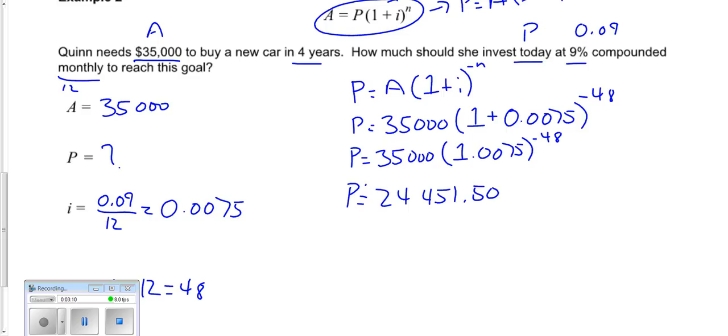So again, my present value is less than my future amount, which is what it should be in an ideal world. And so again, we're just substituting in and then solving.